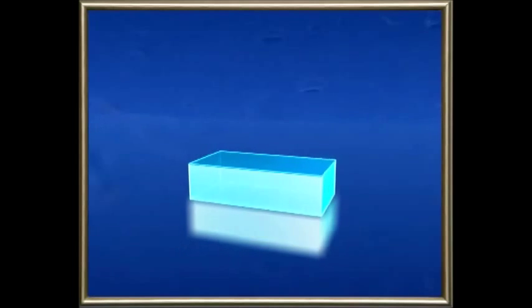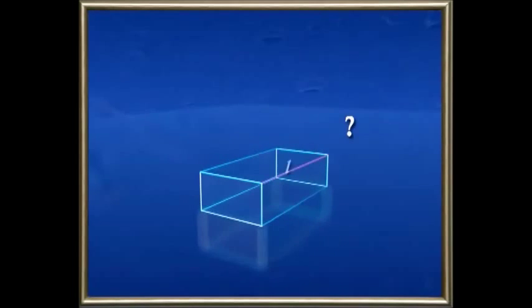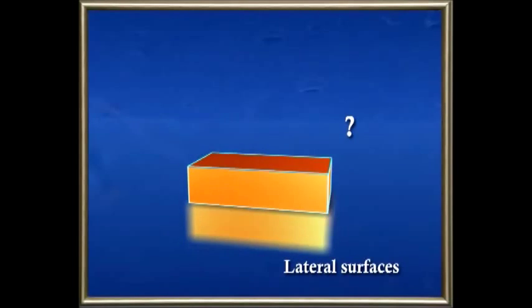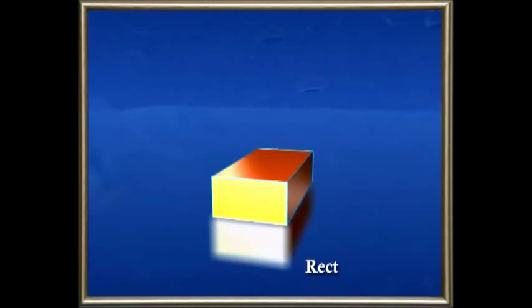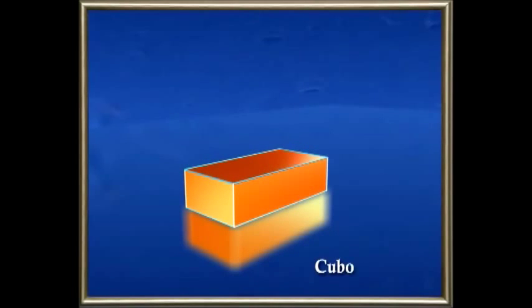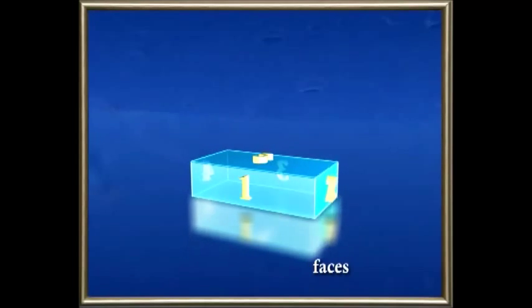This has three dimensions — length, breadth, and height — so this is a solid object. The sides are called lateral surfaces. What is the shape of these lateral surfaces? Yes, you are right, it is a rectangle. The four lateral surfaces are rectangular shaped, and the base and the top are also rectangular shaped. Such a solid is called a cuboid. So how many faces does a cuboid have?